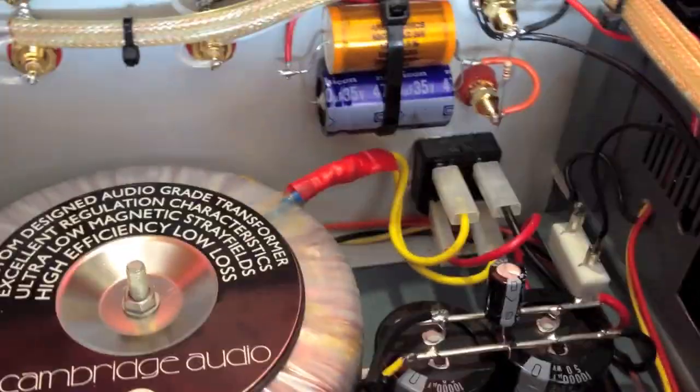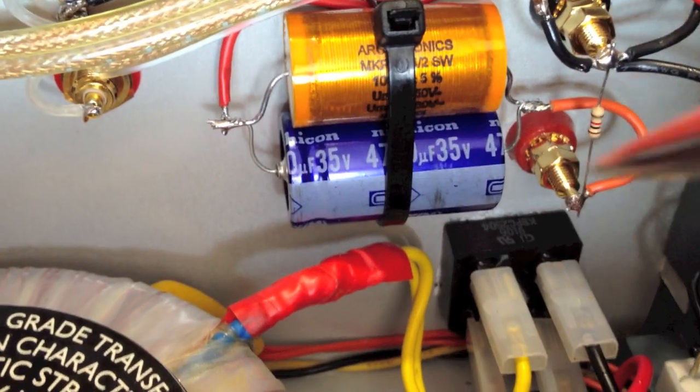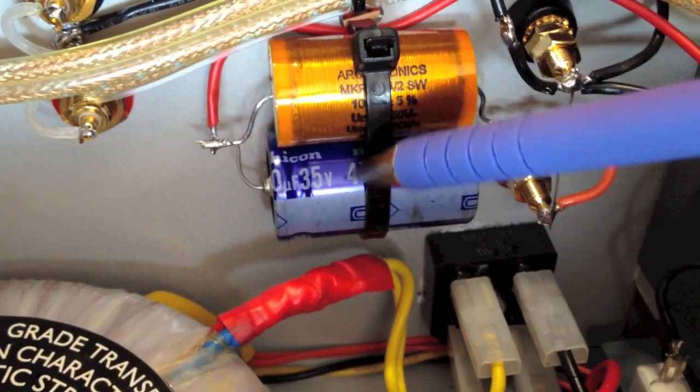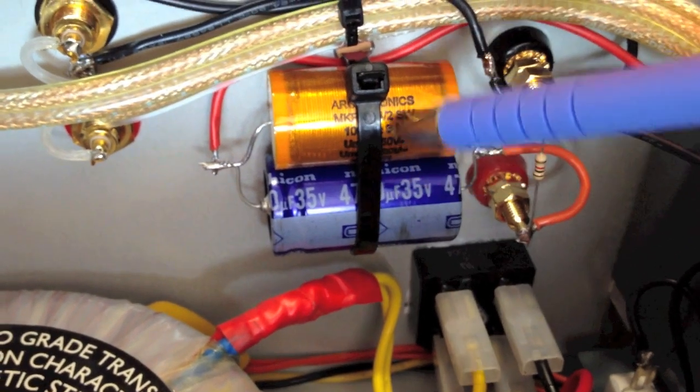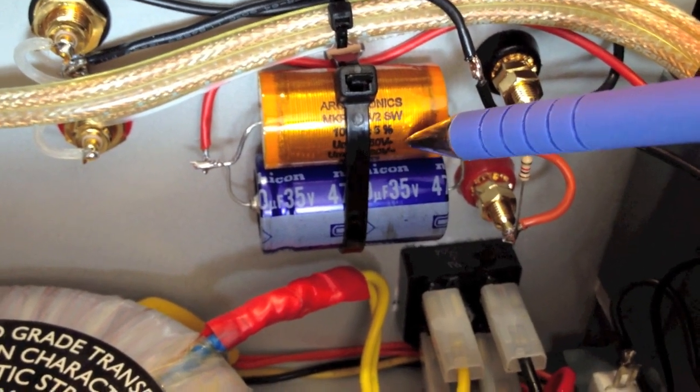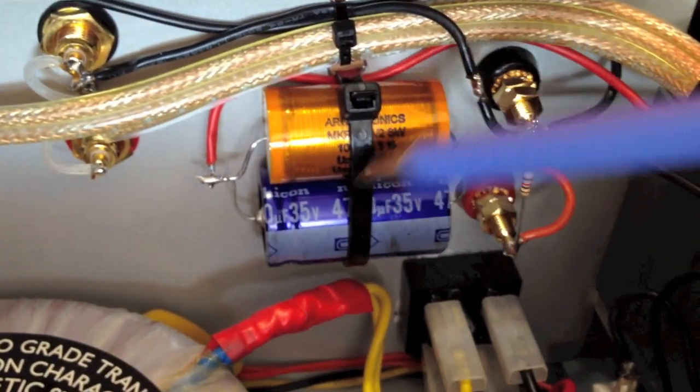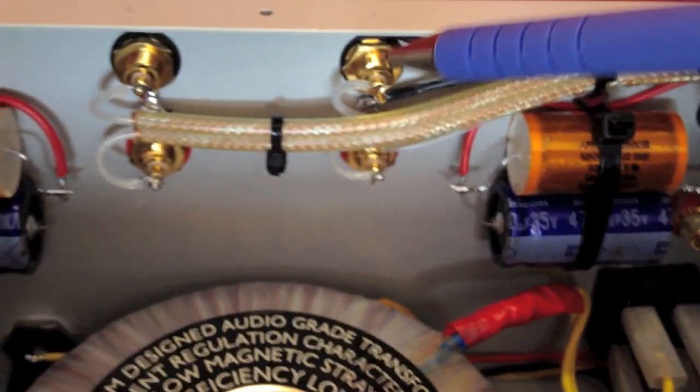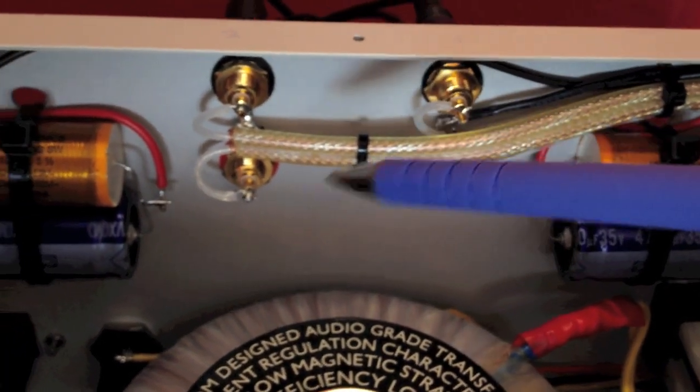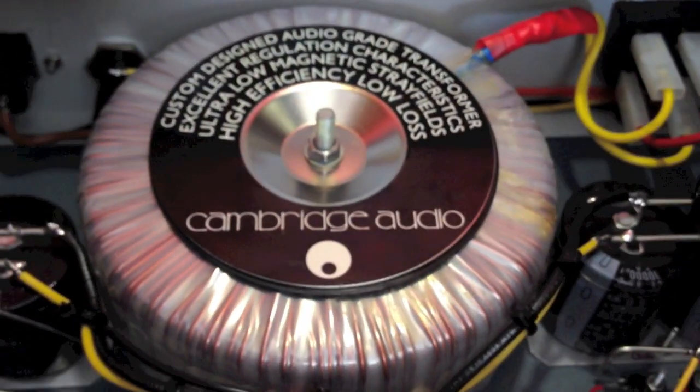On the output here are the DC blocking capacitors, 4700 microfarads 35 volts. I've put a 10 microfarad polypropylene capacitor in parallel with that to help keep the impedance low at the top end of the frequency range. There are the two phono sockets and that's about it for the inside of the amplifier.